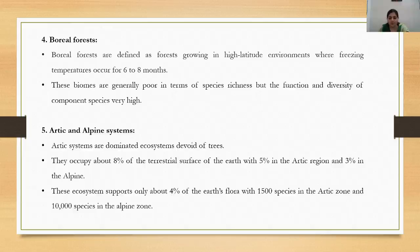The next ecosystem type is arctic and alpine systems. Arctic systems are tree-devoid ecosystems that occupy about 8% of the terrestrial surface of the Earth — 5% in the arctic region and 3% in the alpine. These ecosystems support about 4% of Earth's flora, with 1,500 species in the arctic zone and around 10,000 species in the alpine zone.